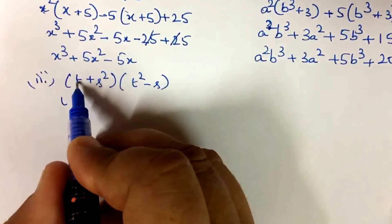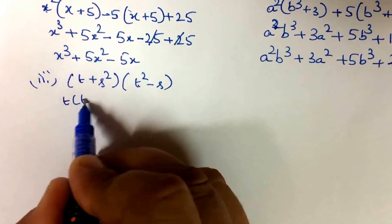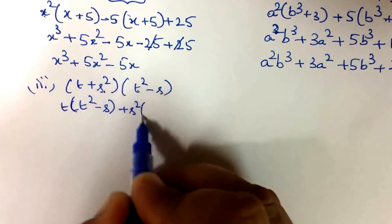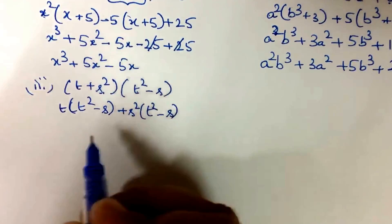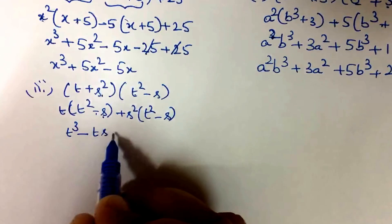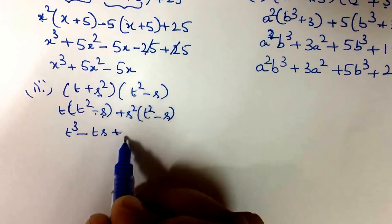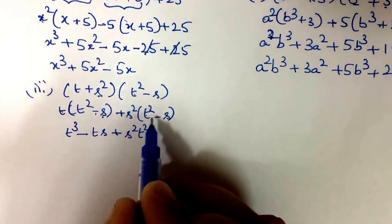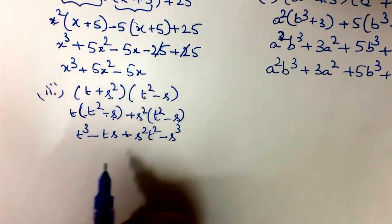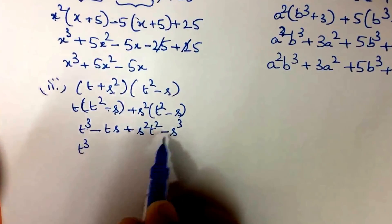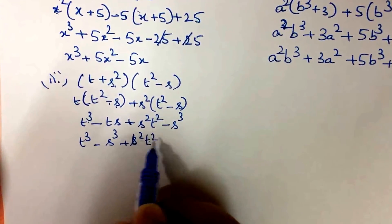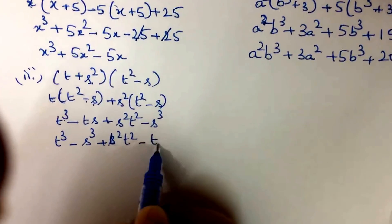Taking t into the second expression: t² - s, plus s² into the second expression: t² - s. So t into t² is t³, minus t into s is ts, plus s²t², plus into minus is minus, s² into s is s³. Writing it as: t³ - s³ + s²t² - ts.